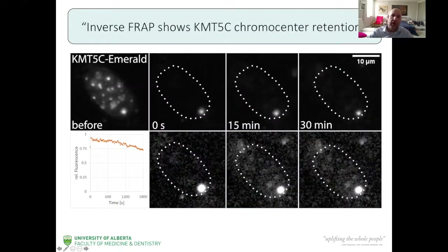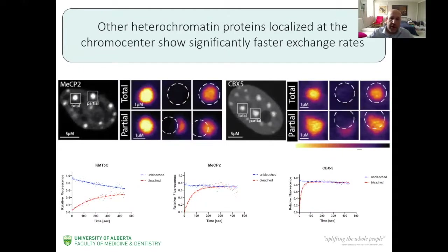We also performed inverse FRAP, where we photobleached everything but one chromocenter, and then waited for the proteins that were unbleached in that chromocenter to redistribute to other chromocenters over time. As you can see, it takes a long time before you even see anything, even when you enhance the contrast. When we compare this to other proteins like MECP2 or CBX5, they don't have this behavior — when you totally bleach chromocenters, they reappear after a couple of seconds, especially fast for CBX5.